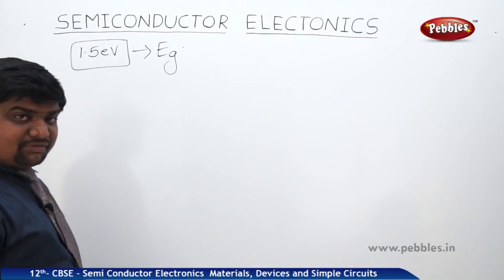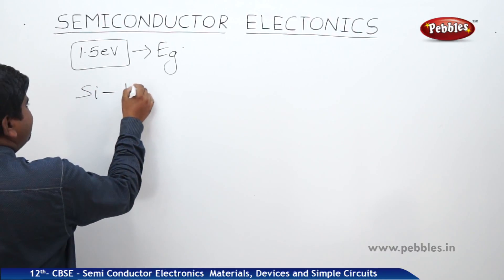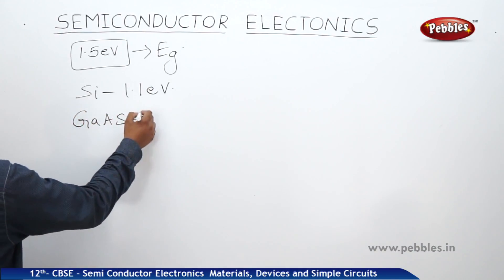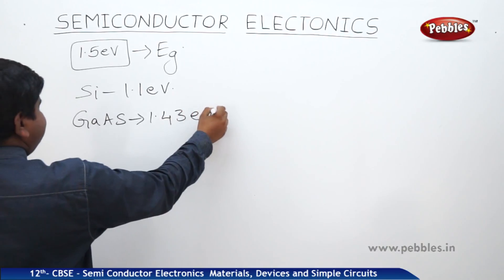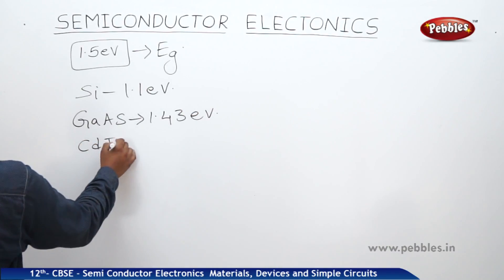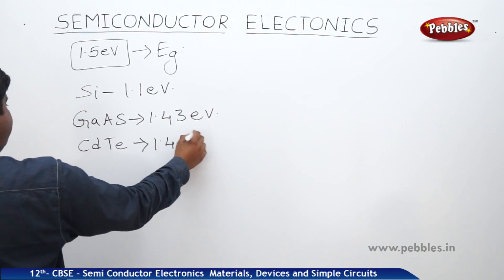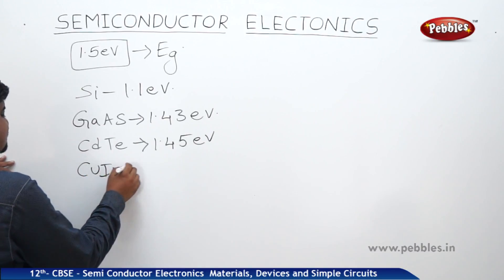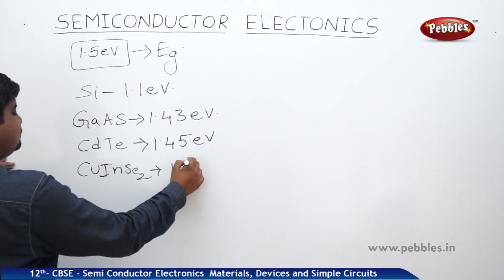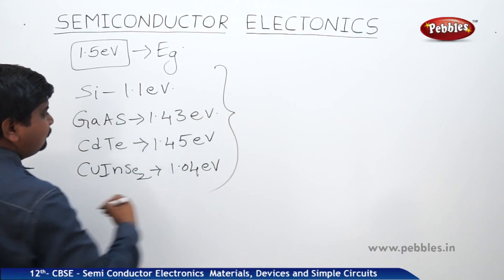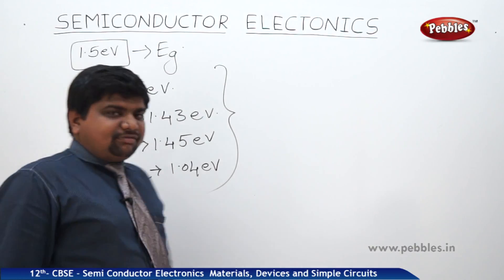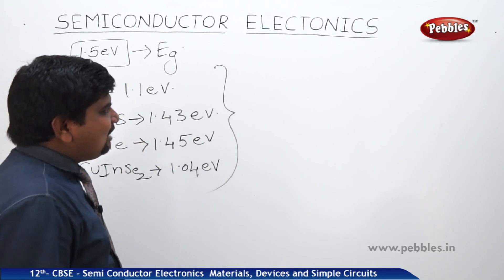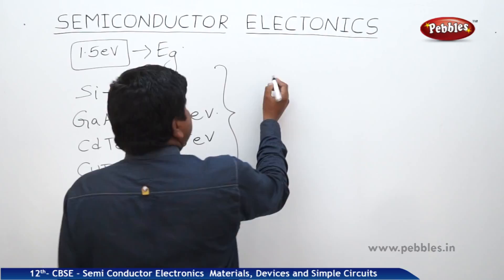So, what are the semiconducting materials which has this type of energy gap? Silicon 1.1 EV, Gallium Arsenide 1.43 EV, CDTE 1.45 EV, CUINSE2 1.04 EV, the semiconductor which has these type of values in the order of 1.5. They are best suitable for the construction of solar cell. And what will be the graph and the schematic diagram of this photovoltaic effect?